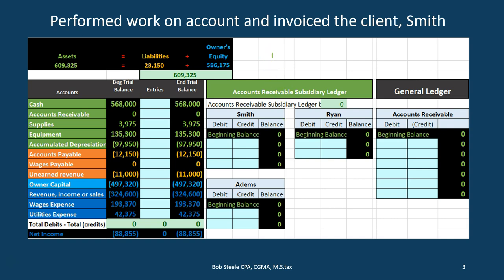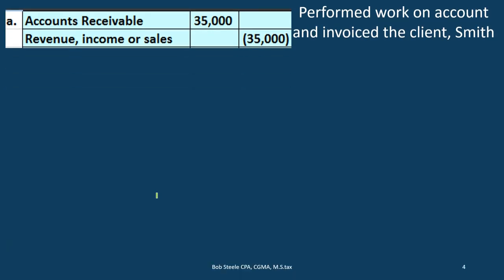If we did work on account and invoiced the client — client being Smith — then we're going to record the normal journal entry. Going through our questions: is cash affected? No, we did the work on account. We didn't receive cash; however, we got an IOU. That IOU is accounts receivable. Accounts receivable has a debit balance, so we're going to make it go up by debiting it. The reason people are going to pay us money is because we did work and earned revenue, so we're going to credit the revenue. The journal entry would look like this.